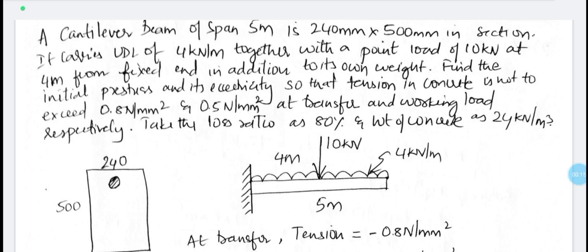Find initial pre-stress and its eccentricity so that tension in concrete is not to exceed 0.8 N per mm square and 0.5 N per mm square at transfer and working load respectively. Take the loss ratio as 0.80% and weight of concrete as 24 kN per meter cube.